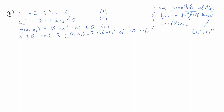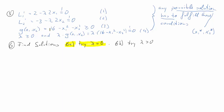Now that we have stated the necessary conditions, we proceed to find which combinations of x₁, x₂ and lambda satisfy them. This involves two steps: first we try to find a solution with lambda equal to 0, and then we try to find a solution with lambda greater than 0. Let's try the first step.